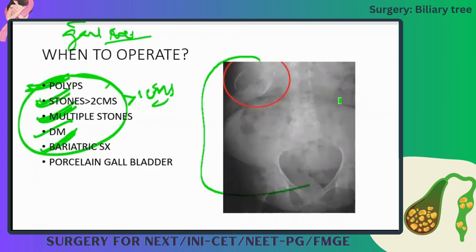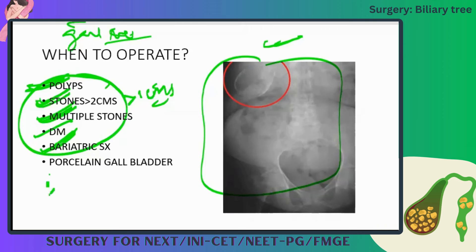On X-ray, if you see calcification of the gallbladder wall — a calcified gallbladder — this is known as porcelain gallbladder. Whenever you identify a porcelain gallbladder, cholecystectomy must be performed because it is a premalignant condition.